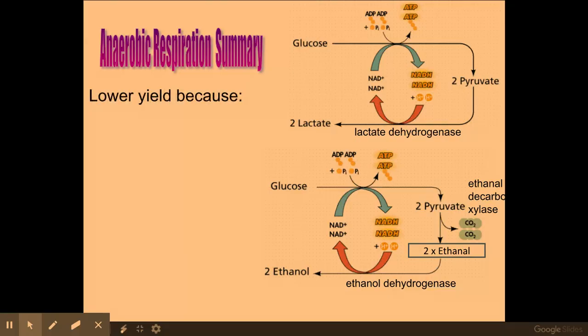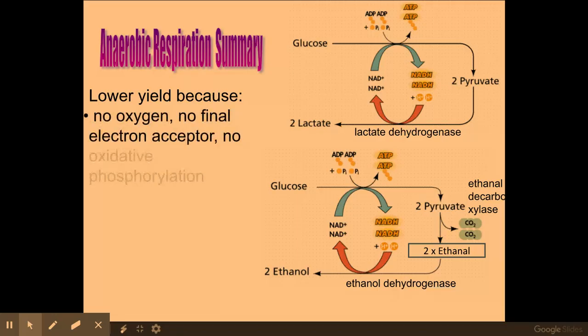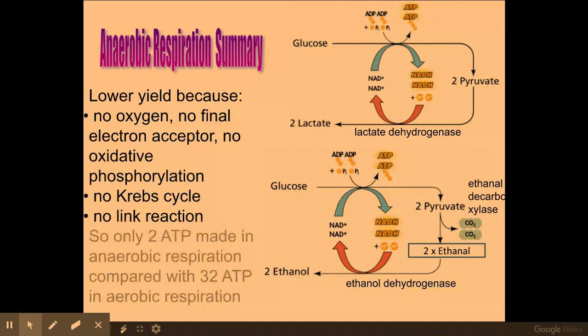Some key things here to think about. There is a lower yield of ATP here, and this is because I have no oxygen and no final hydrogen and electron acceptor, because I have no oxidative phosphorylation, no Krebs and no link reaction. So this means I've only got in anaerobic respiration a net productivity of two ATPs instead of the 32 that are theoretically available through aerobic respiration.